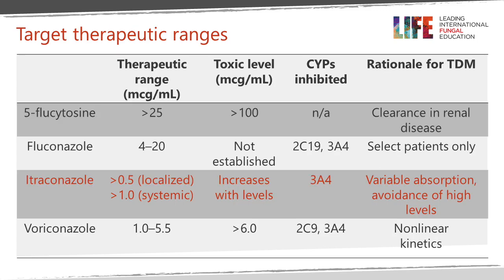The therapeutic drug ranges recommended for itraconazole with HPLC levels are more than 0.5, and more than 1 if you have a systemic infection. A toxic level is not clearly defined with a single value but increases gradually as levels rise. It inhibits CYP3A4 metabolism and therefore has quite a lot of drug interactions which should be checked before prescribing. Absorption is variable, with poor absorption in patients with mucositis, advanced HIV disease, and those on PPIs if capsules are taken. It's also better absorbed with food.